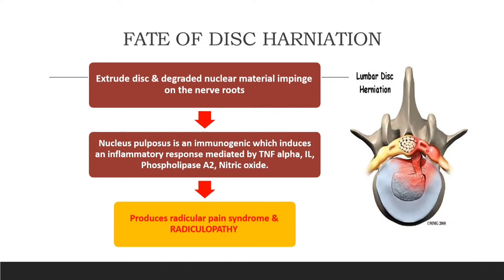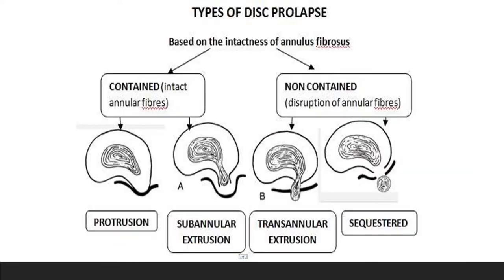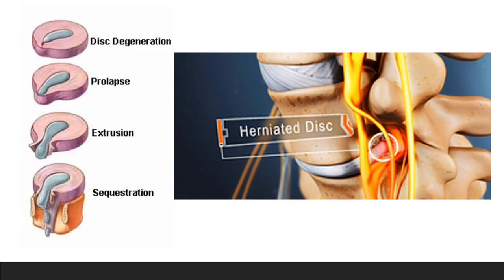Here you can see that herniated material can compress the nerve roots, producing radiculopathy. The types of disc prolapse can be classified into protrusion, extrusion, and sequestration. The disc can become prolapsed, extruded, or sequestrated — where the material is completely outside the annulus.